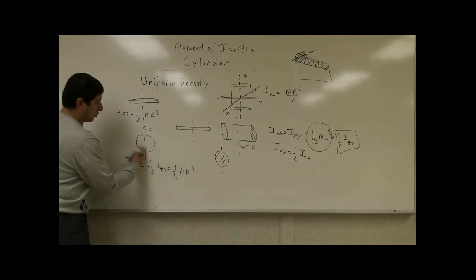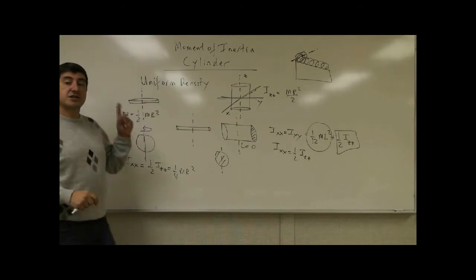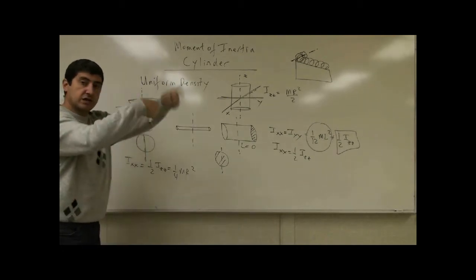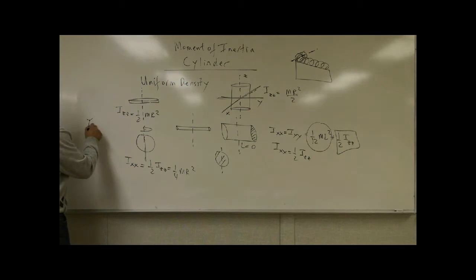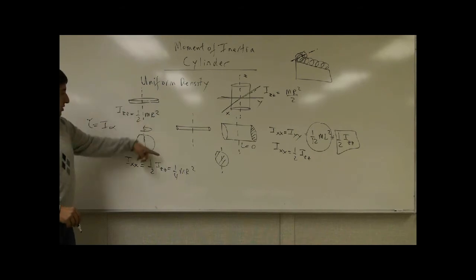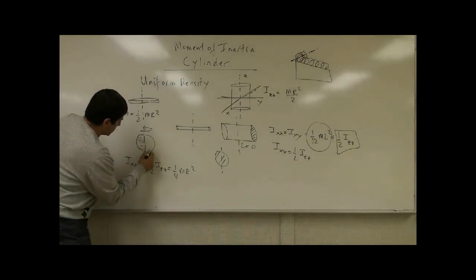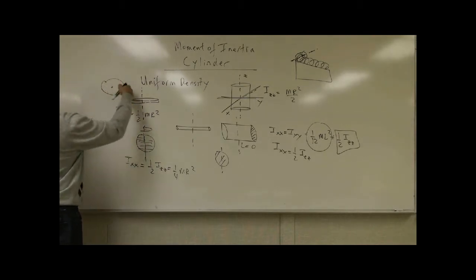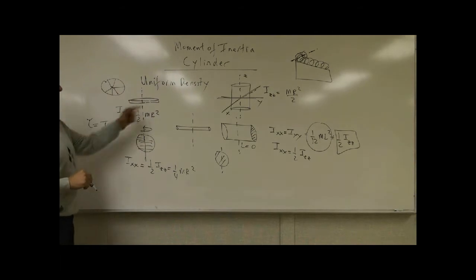Since IZZ is (1/2)MR², flipping the coin gives IXX = (1/4)MR². So flipping the coin is easier to rotate than spinning it like a top. If you exert the same torque on the coin in each direction, which rotation spins faster? The flip wins — using torque equals I·alpha, since the moment of inertia of the flip is half that of the spin, it will spin twice as fast. The mass is closer to the axis of rotation when flipping, which makes it easier.